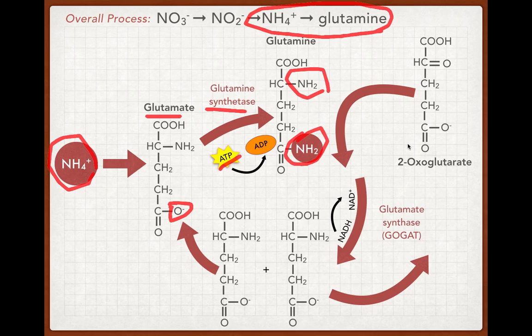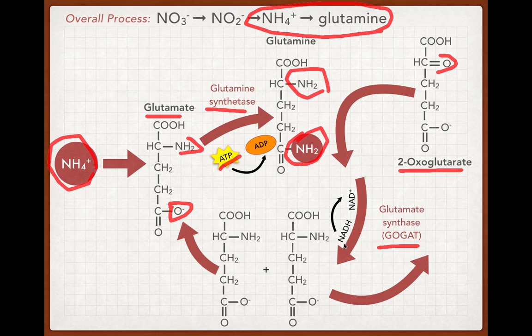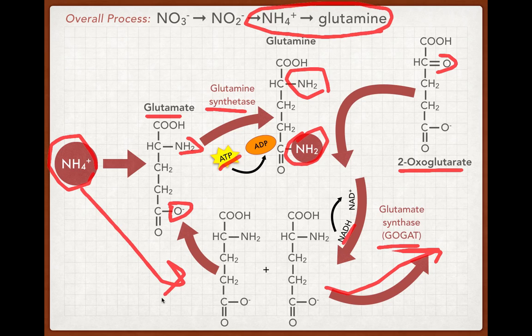Then we add a molecule of 2-oxoglutarate, which comes from the Krebs cycle of cellular respiration. This molecule differs from glutamate because it has a carbonyl group instead of an amino group. With catalysis from glutamate synthetase and energy from NADH or ferredoxin, that carbonyl group is replaced with one of the two amino groups from glutamine, producing two glutamate molecules. One glutamate is the product of the reaction, and the other is used to combine with another ammonium molecule to start the cycle all over again.